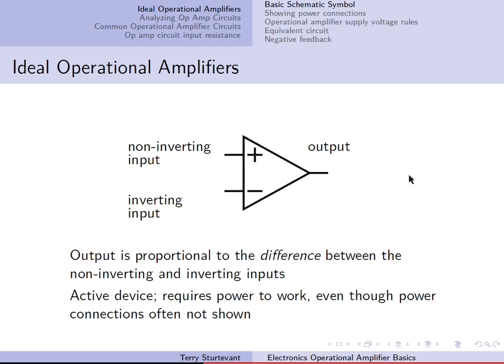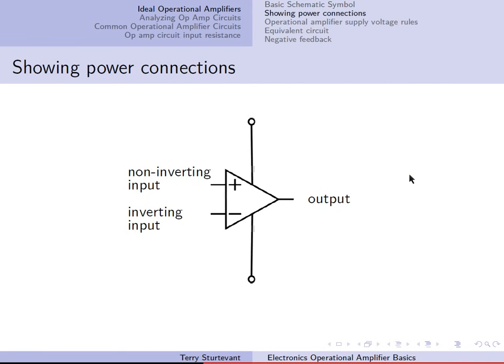It's an active device, so that means it requires power to work, even though the power connections aren't usually shown. Here's what it looks like when the power connections are shown — we have a positive supply and a negative supply.